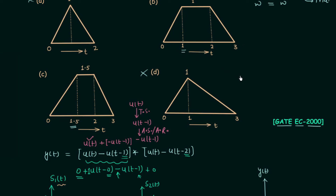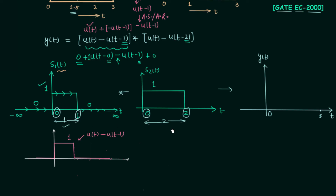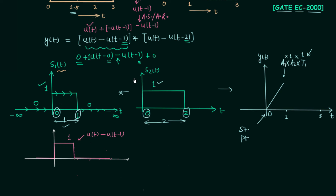So the signal increases linearly up to t equal to 1. The peak value it reaches is a1 × a2 × t1, where t1 is the minimum width equal to 1, a2 is the amplitude of the second signal equal to 1, and a1 is the amplitude of the first signal also equal to 1. So 1 × 1 × 1 = 1. The signal increases linearly up to t=1 and reaches a value of 1.